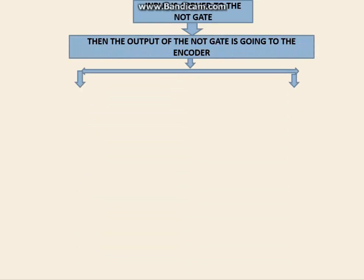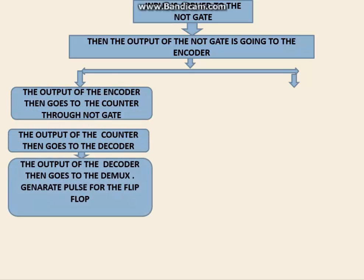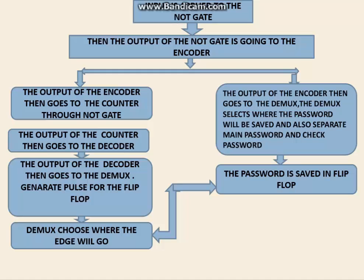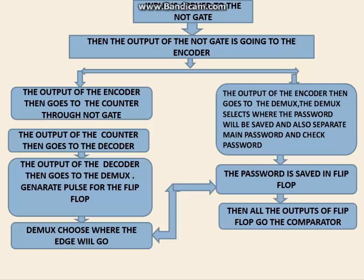First, the input is applied to some NOT gates, and the output of the NOT gates is fed into an encoder. The output of that encoder goes through some gates and generates a positive pulse. The encoder output also goes to another set of demultiplexers, which selects whether to save the input password or to input a password. The password is saved by the positive edges generated by the other demultiplexer set and is saved to flip-flops.